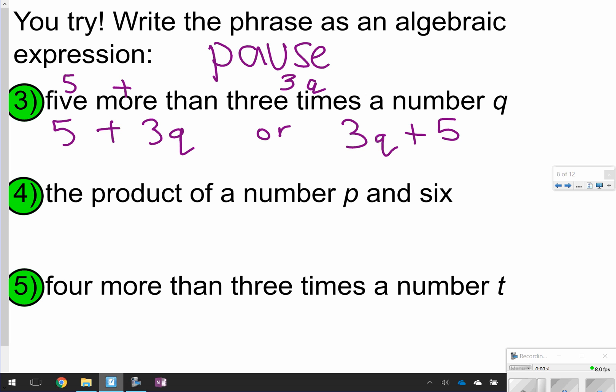The product of a number, p and 6. Product, again, means multiplication. The proper mathematical way would be writing it like this, 6p, but you could have also written as p times 6. You cannot write it like this. p6, that does not represent anything. So just make sure, I prefer you to write it like this, with the number in front, followed by the variable.